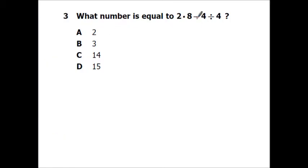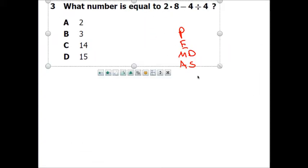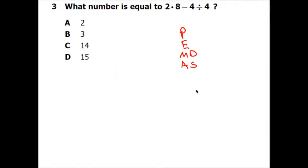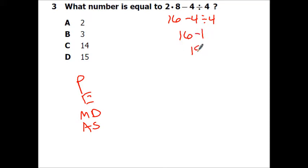Number 3 says what number is equal to 2 times 8 minus 4 divided by 4? So this is just order of operations. Remember, it's parentheses, exponents, multiply, divide, add, subtract. If multiplication and division are on the same line, we just do it from left to right. So no parentheses, no exponents. We have multiplication and division. Since multiply is the first thing we come into, we're going to go ahead and do that. So 16 minus 4 divided by 4. We're now going to do the division. So 4 divided by 4 is 1. 16 minus 1 is 15.